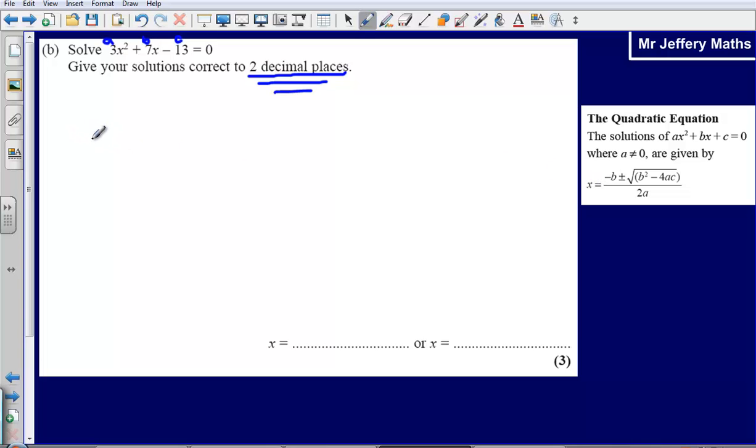Let's start doing that. A is the coefficient for our x squareds, B is the coefficient for our x's, and C is that number on the end. Now putting each of these numbers into this formula, I end up with minus B, so minus 7, plus or minus the square root of B squared, so 7 squared, minus 4ac, so minus 4 times 3 times negative 13, divided by 2a, which is 2 times 3.